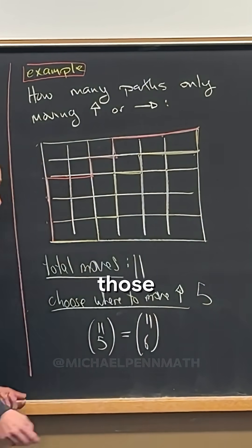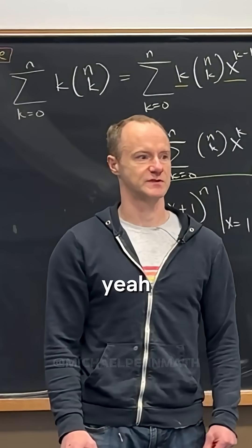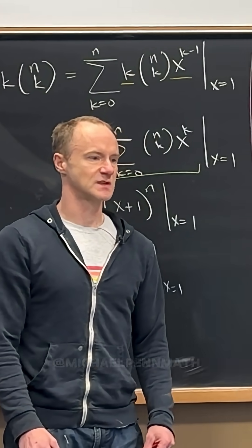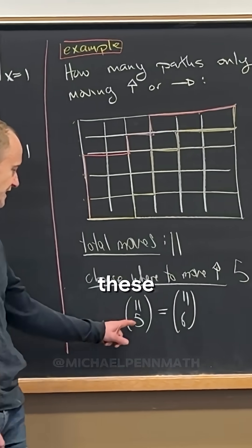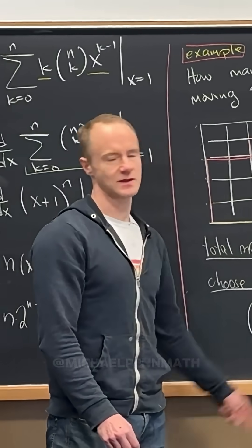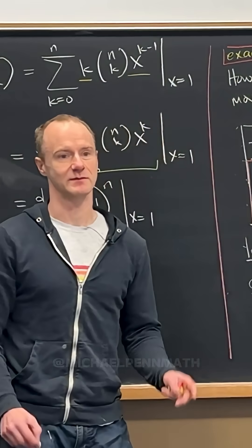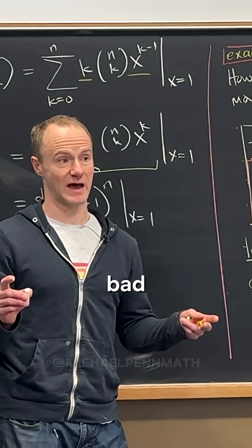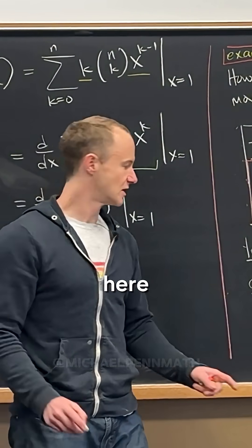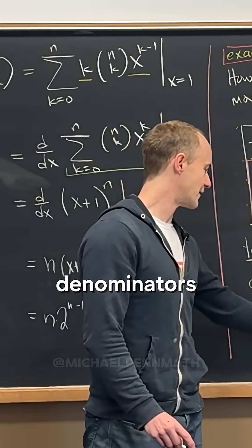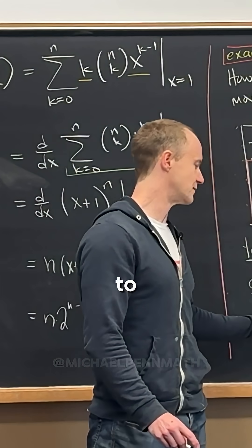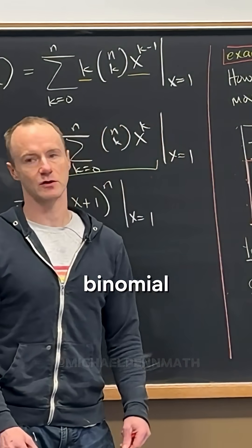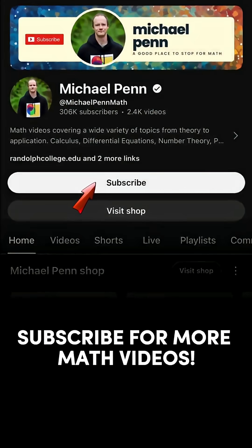Using some informal terminology here: whenever the two numbers in the denominator sum to the numerator, the binomial coefficients are equal — that's why eleven choose five equals eleven choose six.